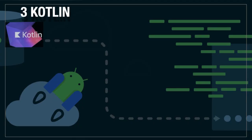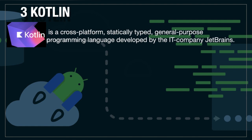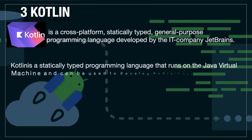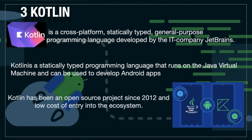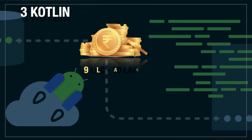In 3rd position is Kotlin. Kotlin is a cross-platform, statically typed, general-purpose programming language developed by the company JetBrains. Kotlin runs on the Java Virtual Machine and can be used to develop Android applications. Before, Android application development used Java, but now most people use Kotlin. Kotlin has been an open source project since 2012 and has a low cost of entry into the ecosystem. If you have knowledge of Kotlin, you get 9 to 10 lakh.